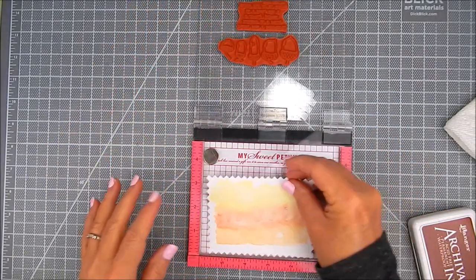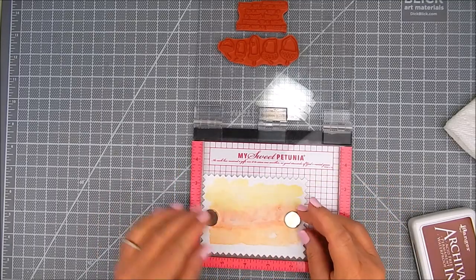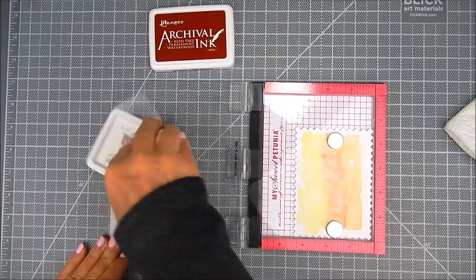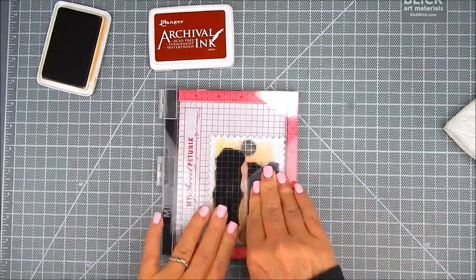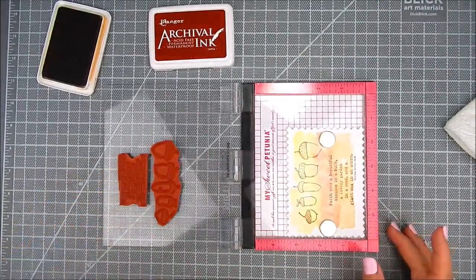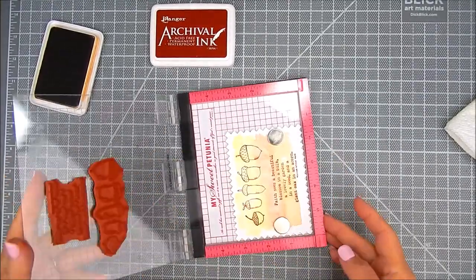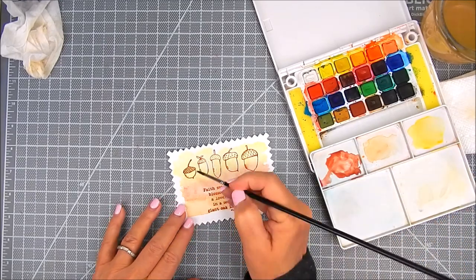I'm going to be using the Misti to stamp with. I like to stamp on the smooth side of the watercolor paper. I use two passes with Ranger Archival ink, it works well with watercolor projects.